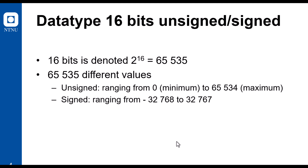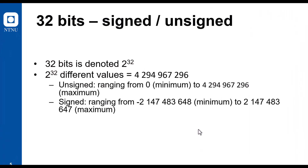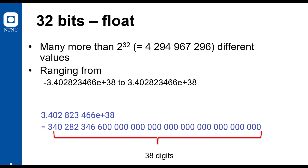16-bit means that you can have many more different values — more than 65,000. 32-bit allows even more different values, and you may also have a 32-bit float. This means that there are more than four billion different values, ranging from very large negative to very large positive numbers. Instead of writing all these digits out, one often denotes them with the number of digits following the decimal separator.